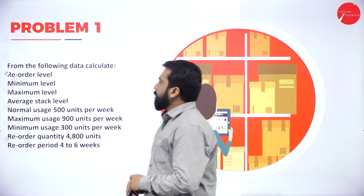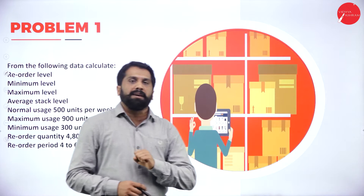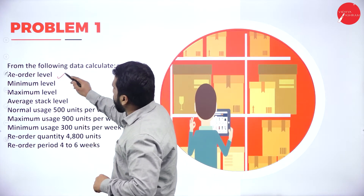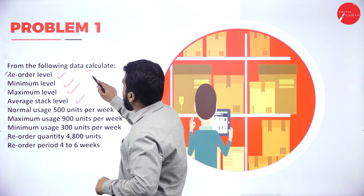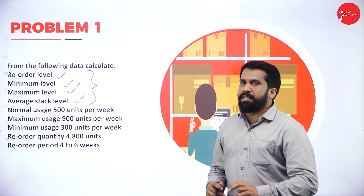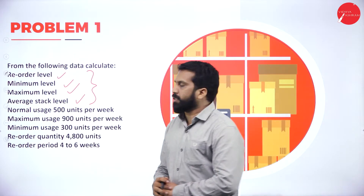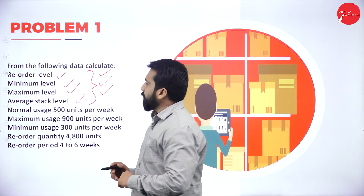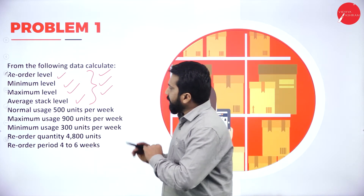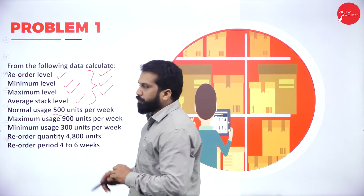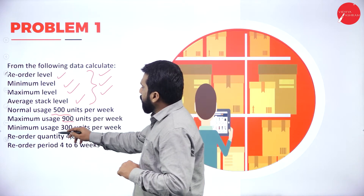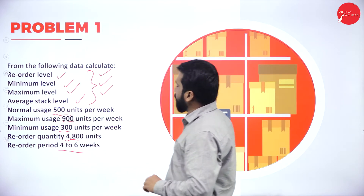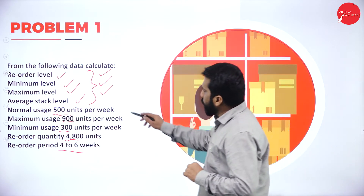We will do one problem on stock level. I'll explain the formula while doing the problem. We are supposed to prepare reorder stock level, minimum stock level, maximum stock level, and average stock level — four separate formulas. The given information is: normal usage 500 units, maximum usage 900, minimum usage 300, reorder quantity 4800 units, and reorder period 4 to 6 weeks.